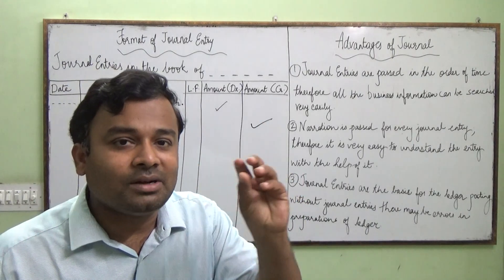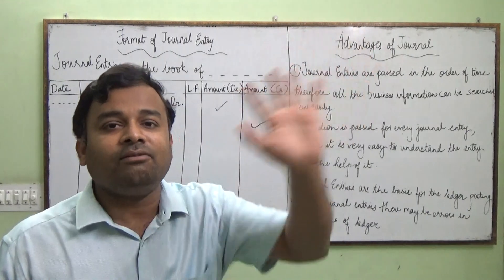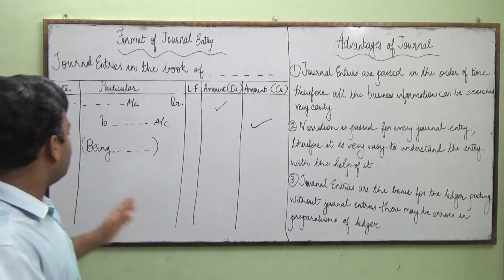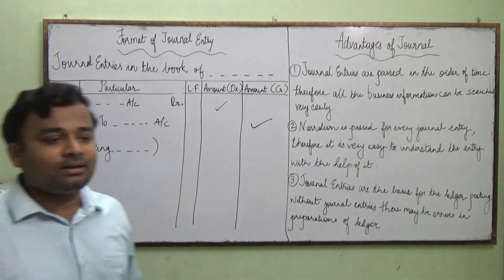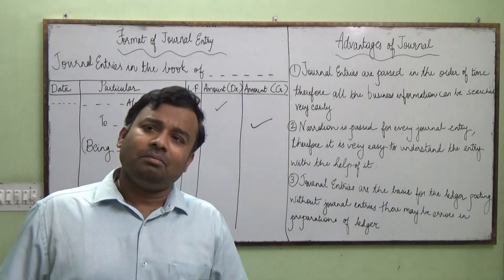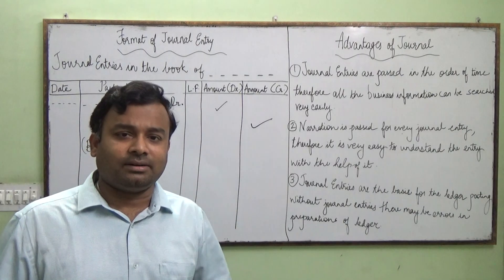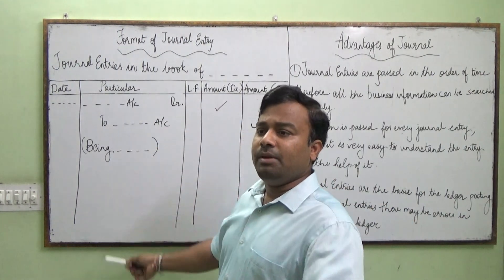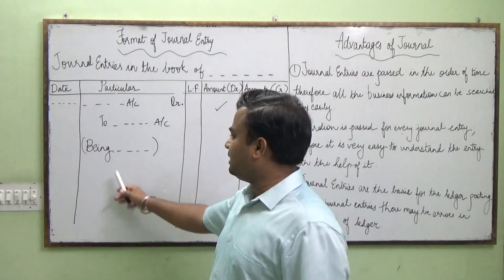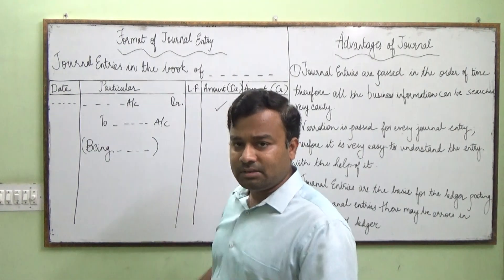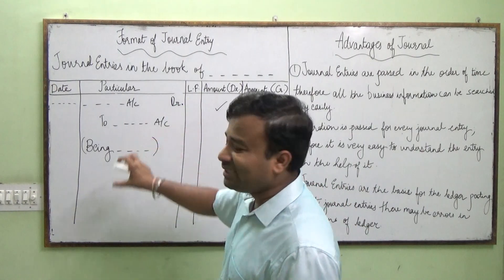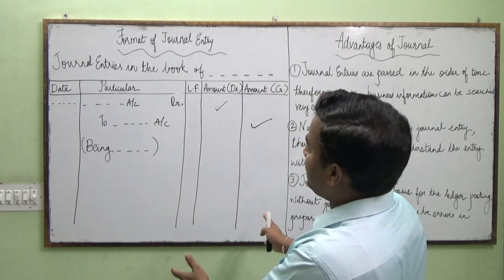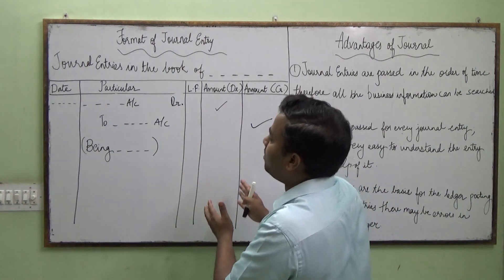In every entry, we write a small description so that when you look back at it, you know why this entry was passed. This description is called narration. In a journal, narration generally starts with the word 'Being' or 'For' written in brackets. For example, for a furniture purchase transaction: 'Being for furniture purchase for cash.' So narration is a description written within our journal format to record transactions in the books.